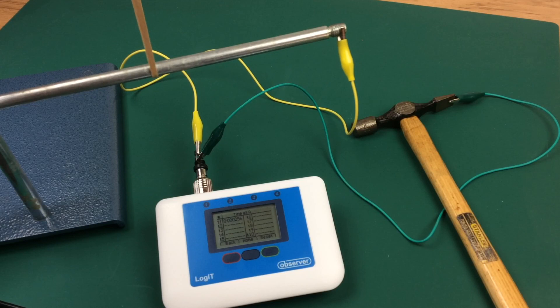Dividing the distance travelled by the time obtained on the observer will give you the speed of the sound in the metal rod.